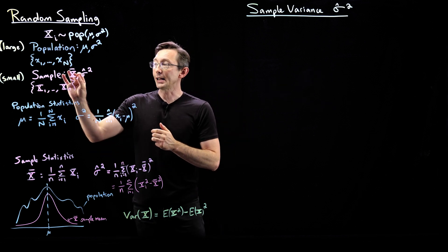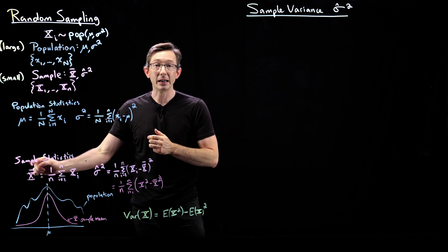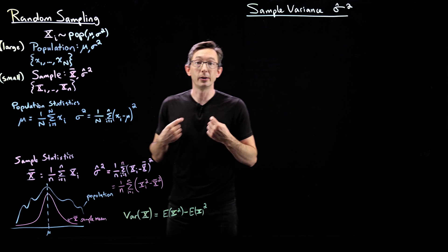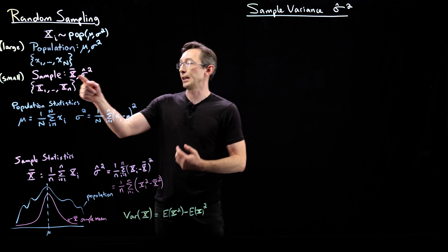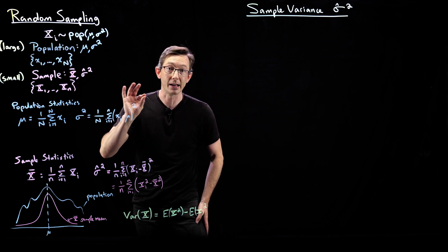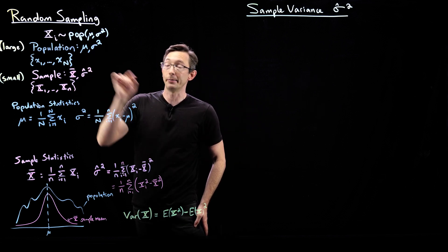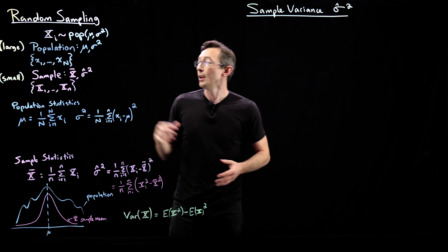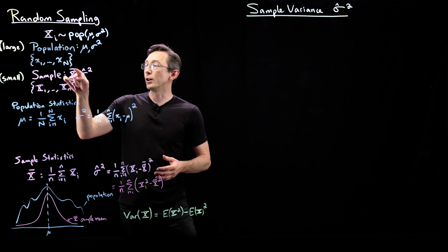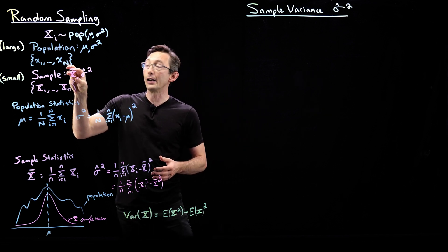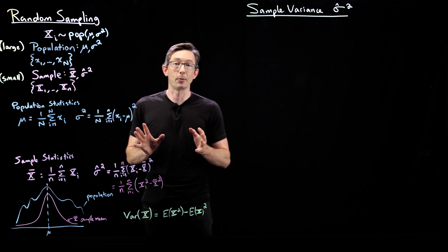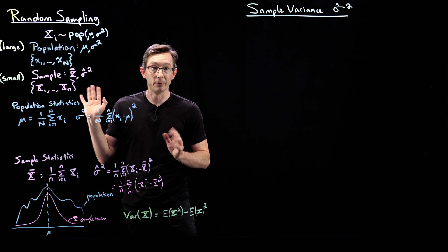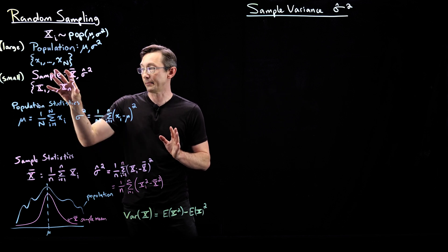We've already looked at the sample mean x-bar extensively. We know that the sample mean x-bar is an unbiased estimate of the population mean mu, and we also know how the variance of x-bar behaves with the size of the sample.